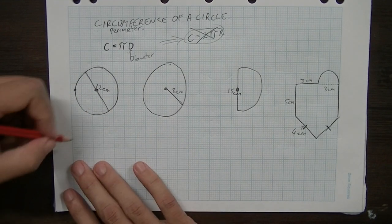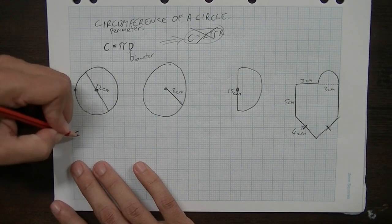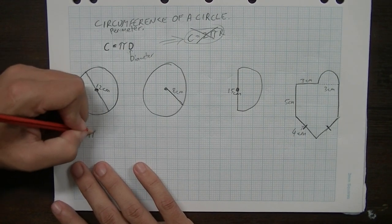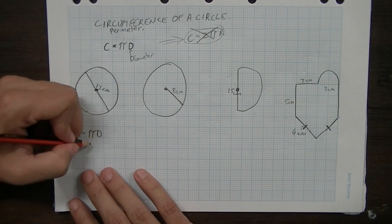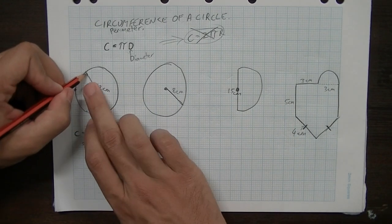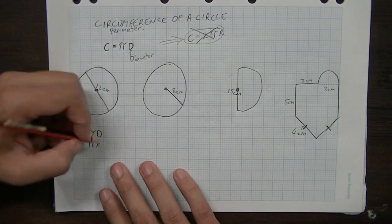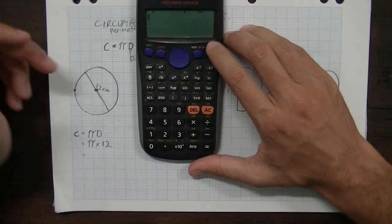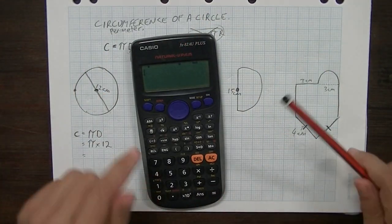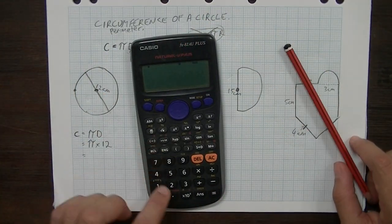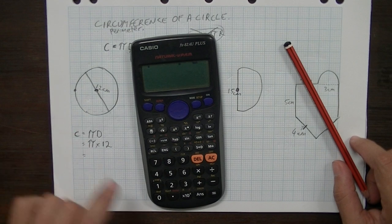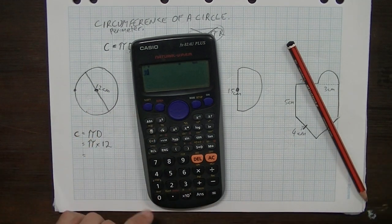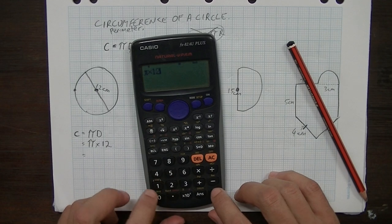So this first circle is really easy to calculate. Circumference equals pi d, which is equal to pi times, in this case the diameter is 12. Now, make sure that you use your pi button on your calculator here. So circumference equals pi, so I need to press shift this button here, times 12.